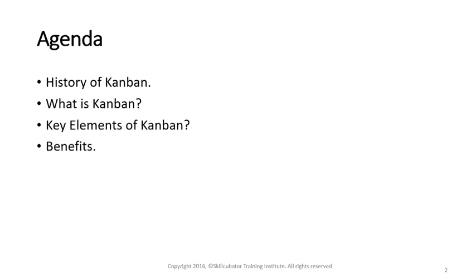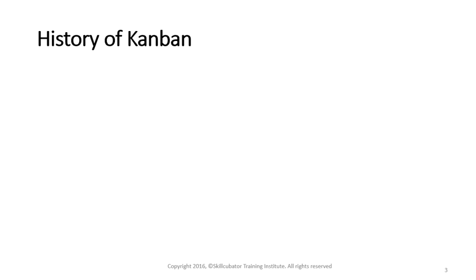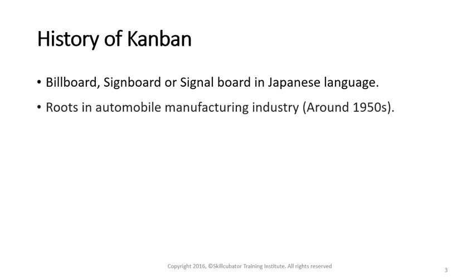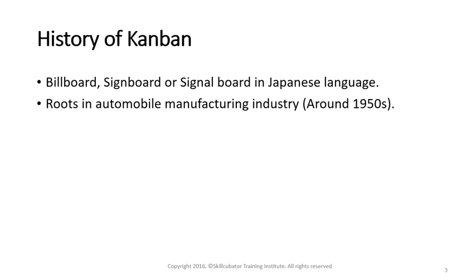Let's start with the history of Kanban. Kanban is a Japanese term which means billboard, signboard, or signal board. The roots of this concept can be found in the manufacturing world — more so in the Japanese automobile sector. Back in the 1950s, these automobile makers were facing issues like imbalance between the demand for their products and the system capacity, which is essentially the bandwidth of your production system to produce a given product — in this case, a car.